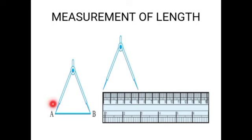First of all, we have to open the divider and place the end point of one of its arms at A and the end point of the second arm at B. Taking care that opening of the divider is not disturbed, lift the divider and place it on the ruler. Ensure that one end point is at the zero mark of the ruler. Now, read the mark against the other end point. Therefore, we can get the accurate measurement of length.